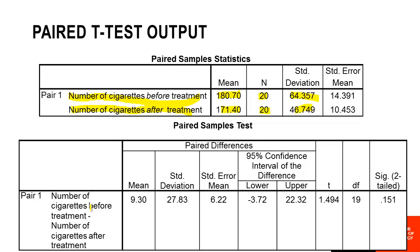The second table gives information about the differences. The difference has been calculated as number of cigarettes before minus number of cigarettes after. The first box gives the mean difference — on average, the difference between the befores and afters was 9.3. We can see it's positive, so the before must be higher than the after, telling us there has been some kind of decrease. But when we get to the end of the table, the p-value will tell us whether this translates into something that occurs in the population.